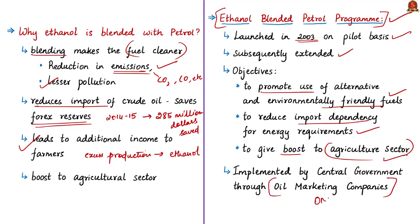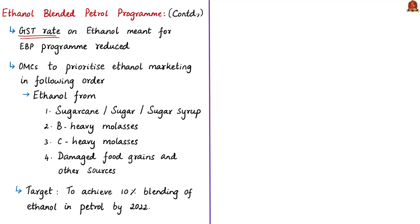The EBP Program is implemented through Oil Marketing Companies (OMCs), which sell ethanol-blended petrol with up to 10% ethanol. To promote blending, the government reduced the GST rate on ethanol meant for this program from 18% to 5%. The government has also advised OMCs to prioritize ethanol marketing to favor the agricultural sector, particularly sugarcane producers.